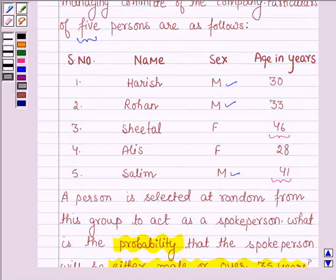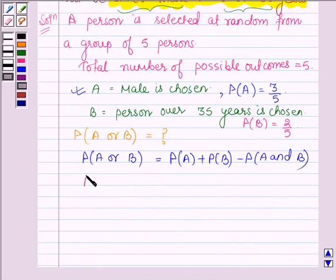And now we have to find the probability of A and B, that is, a male over 35 years is chosen.